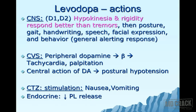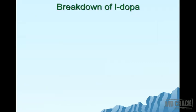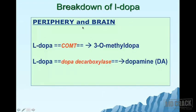Regarding the endocrine system, dopamine inhibits prolactin secretion, so levodopa decreases prolactin release. Levodopa is broken down in both the periphery and brain by two enzymes: COMT (catechol-O-methyltransferase), converting levodopa into 3-O-methyldopa, and dopa decarboxylase, converting levodopa into dopamine.